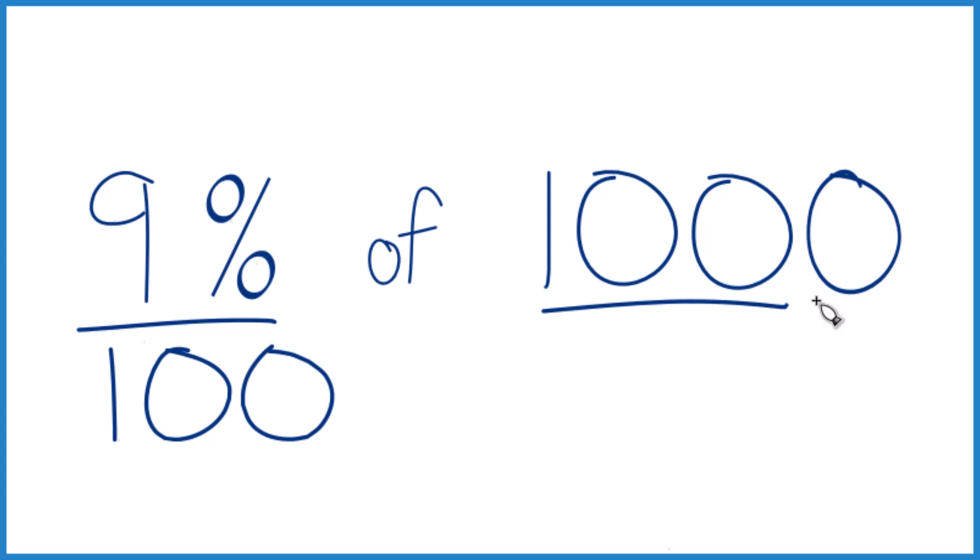But I have 1,000. So instead of 9, I'm going to go one more zero and call it 90. 9% of 1,000, that equals 90.